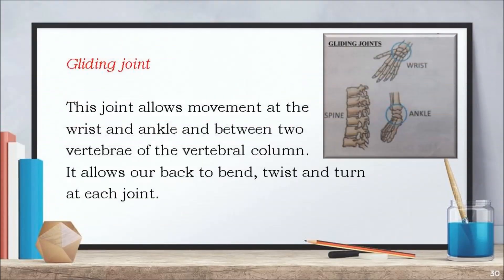The gliding joint allows movement at the wrist and ankle and between two vertebrae of the vertebral column. It allows our back to bend, twist and turn at each joint.